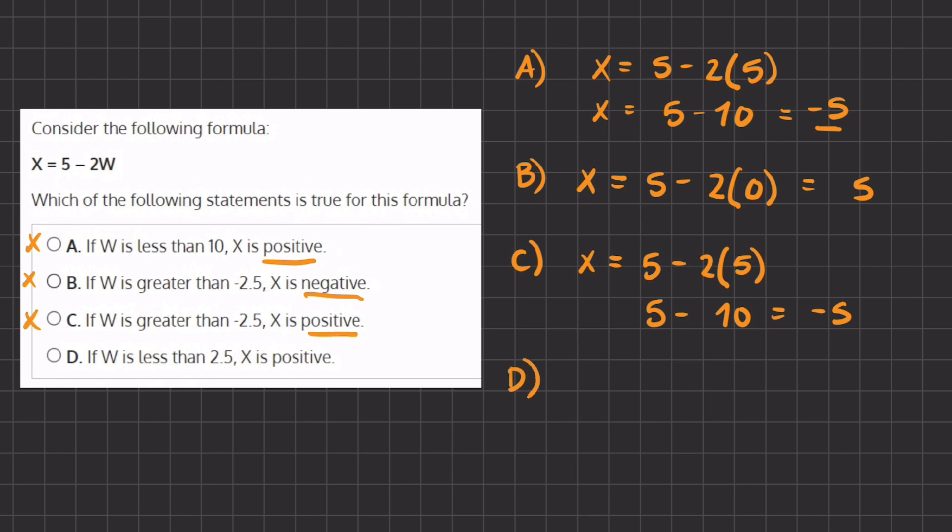And let's check our last answer, D, which should be the correct one. If W is less than 2.5, X is positive. So let's check this out.